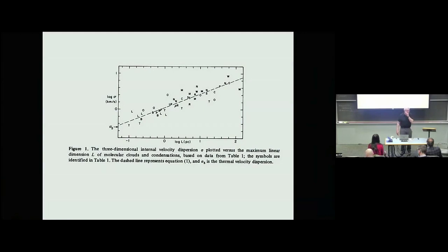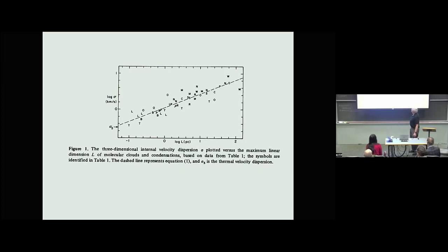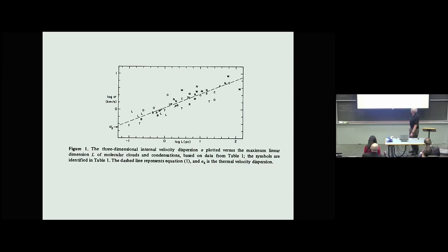I wanted to put up a little bit of data. I already showed this in the very first talk of our workshop but not in the conference. This is the old plot from Larson's paper showing line width sigma versus size, and he interpreted this as due to turbulence. Whatever's driving the turbulence, it's got to be on a scale of order 100 parsecs, which sounds like the scale height of the molecular disk. This is all CO data.